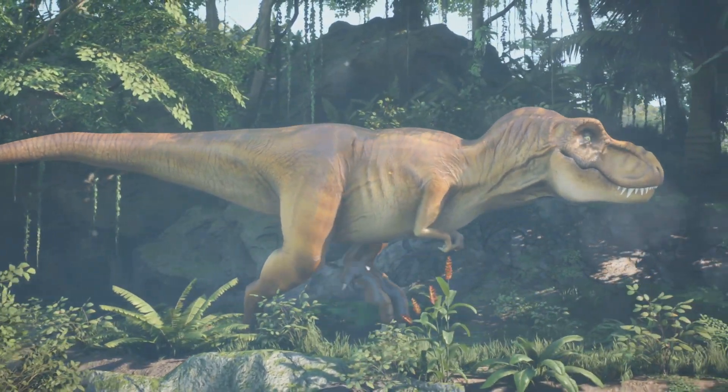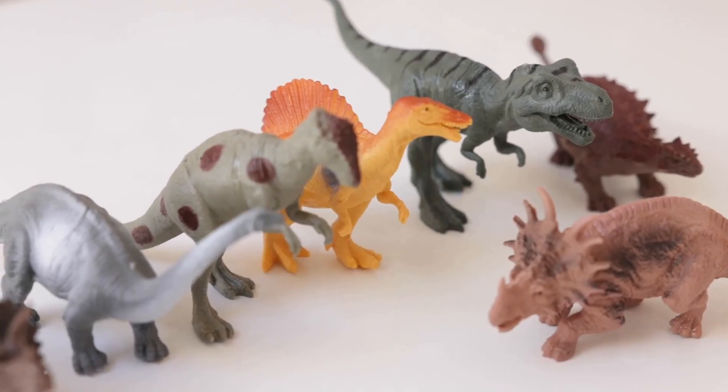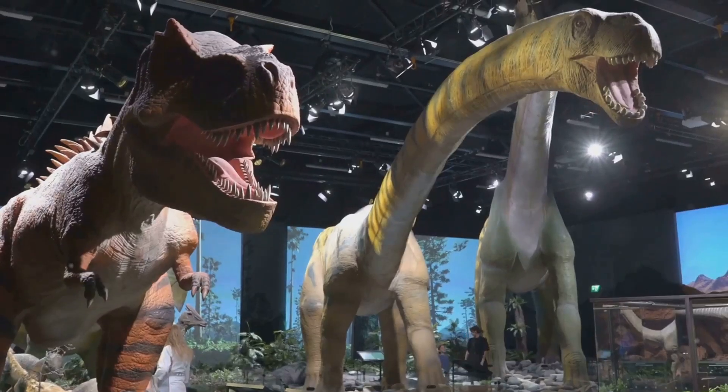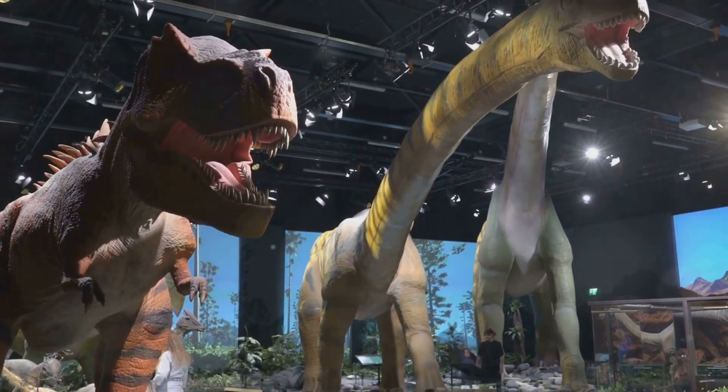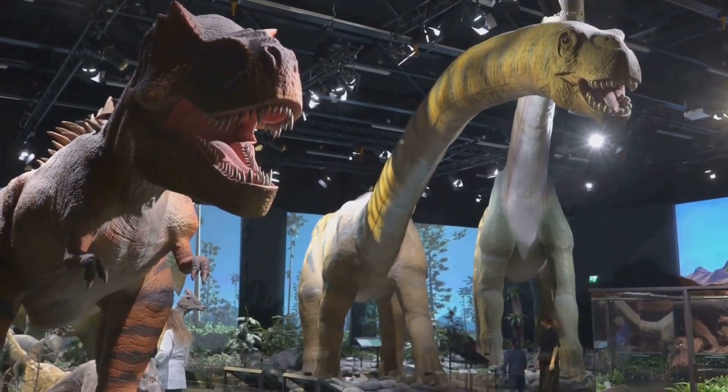Dinosaurs descended from a group of reptiles that had adapted to life on land, evolved into a stunning array of shapes and sizes, from the mighty Tyrannosaurus rex to the long-necked Brachiosaurus, from the armoured Ankylosaurus to the swift Velociraptor.